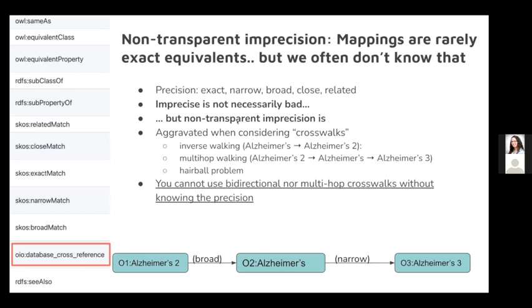We do believe that imprecision is not necessarily a bad thing. The problem is when we don't know about this imprecision. If you get a mapping and blindly try to map data from Alzheimer's in one ontology to Alzheimer's 3 in another, you can get totally wrong results for your users.